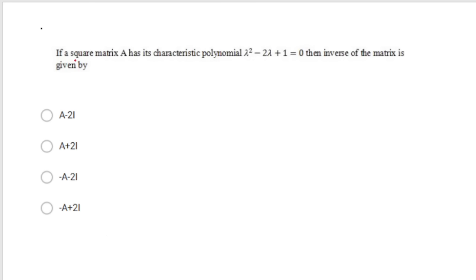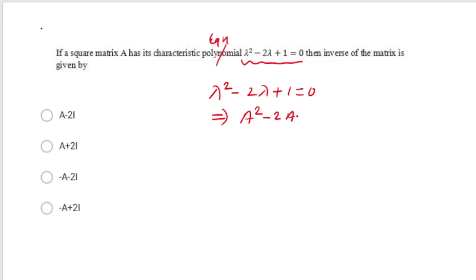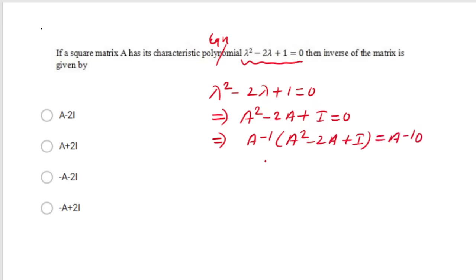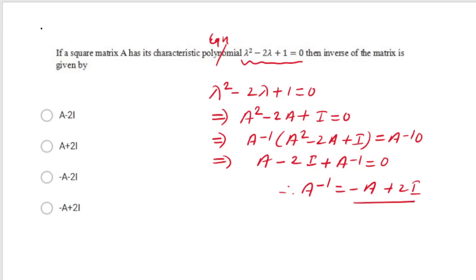If A has characteristic equation λ²−2λ+1=0, find A inverse. Using Cayley-Hamilton theorem, A satisfies its own characteristic equation: A²−2A+I=0. Multiply both sides by A inverse: A − 2I + A⁻¹ = 0. Therefore A⁻¹ = −A + 2I = 2I − A. The correct option is D: A⁻¹ = 2I − A.